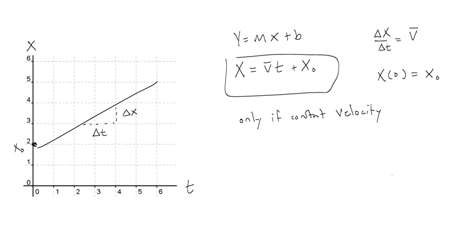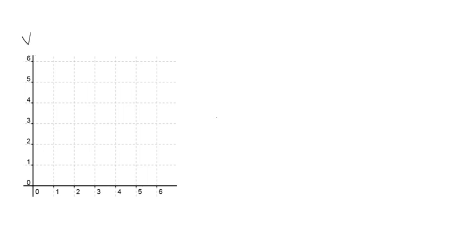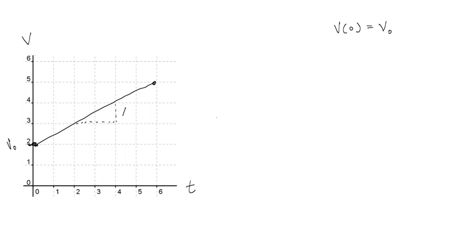The next motion equation comes from looking at a velocity versus time graph. If you make a velocity versus time graph with a similar type of line, you'll have some initial velocity — we call that v-naught, velocity when time is zero. The velocity increases, so there's a rate to the change: rise (change of velocity) over run (change of time), which we call acceleration. We put a bar over it to represent average acceleration.